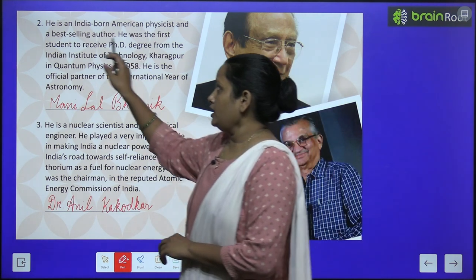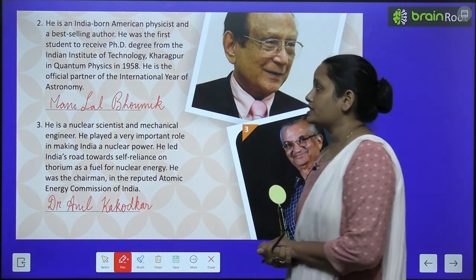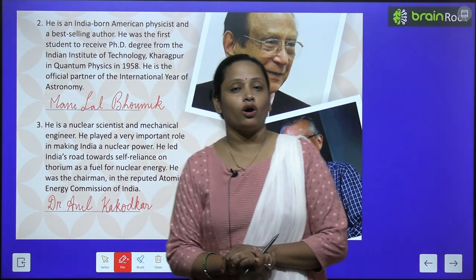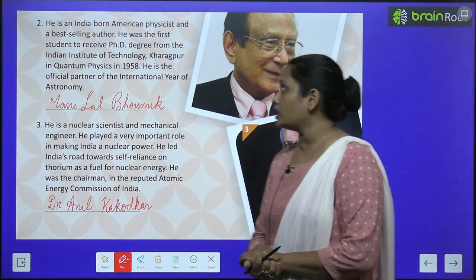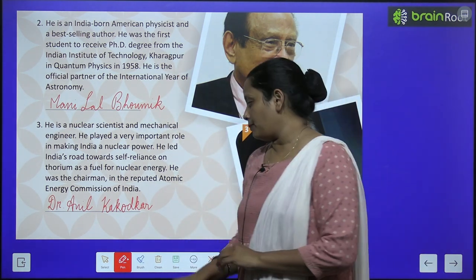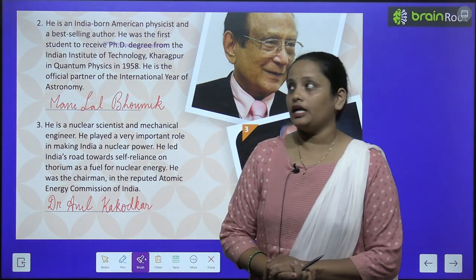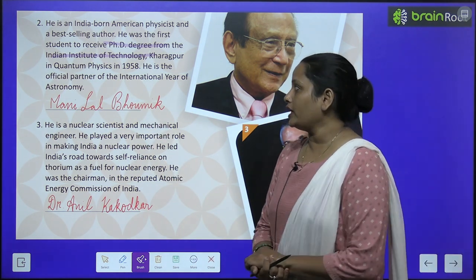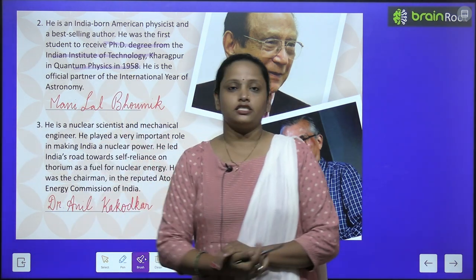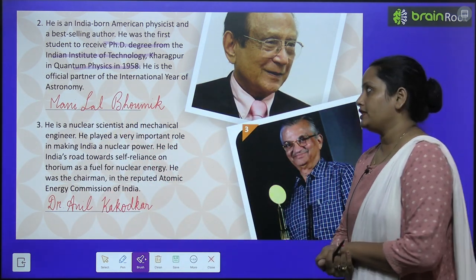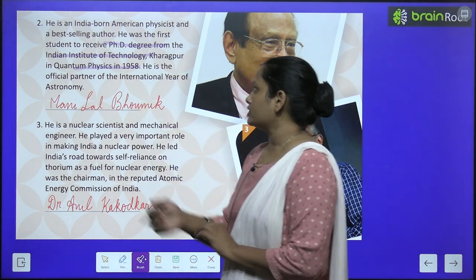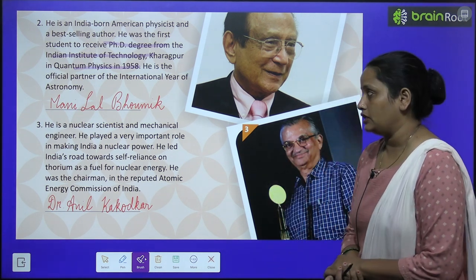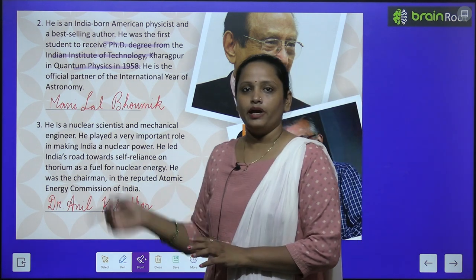Now let's move on to the second scientist. He is an Indian-born American physicist and best-selling author. He was the first student to receive a PhD degree from the Indian Institute of Technology, IIT Kharagpur, in quantum physics in 1958. He is also the official partner of the International Year of Astronomy. His name is Mani Lal Bhaumik.